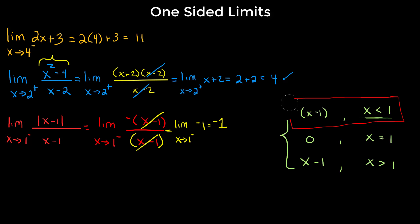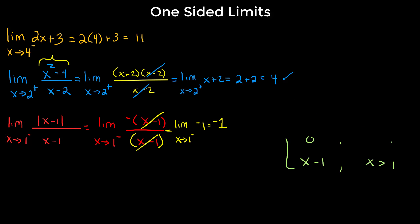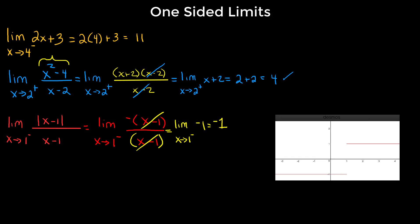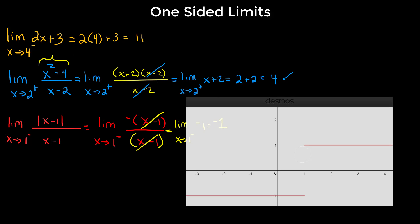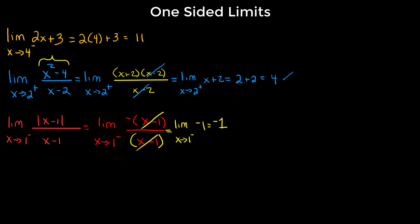Looking at the graph directly, we can see that the function equals negative 1 all the way up until x = 1, and then at x = 1 there's a jump discontinuity, after which it's a horizontal line at 1. That confirms our answer of negative 1.